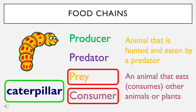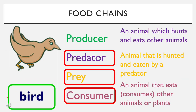Can you remember which predator eats the caterpillar? Yes, that's right — it's the bird. So the bird comes under three different keywords. It is a consumer because it eats the caterpillar. It is a predator because it hunts the caterpillar. But it is also prey because there is something else in the food chain that can eat the bird.